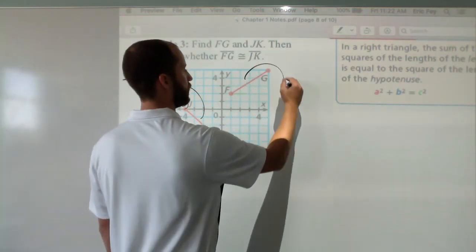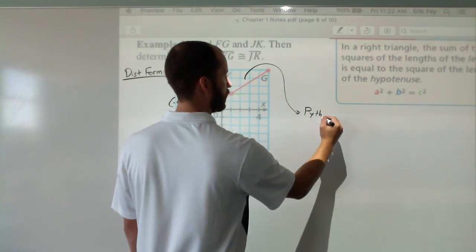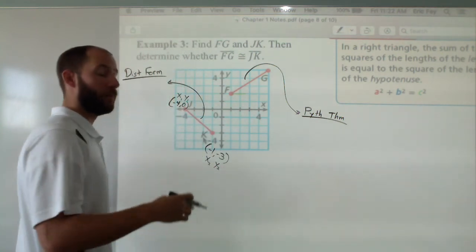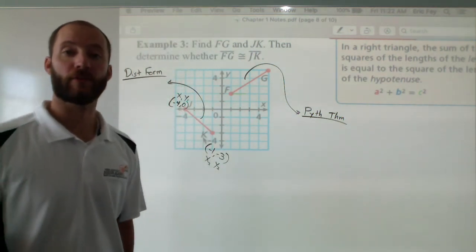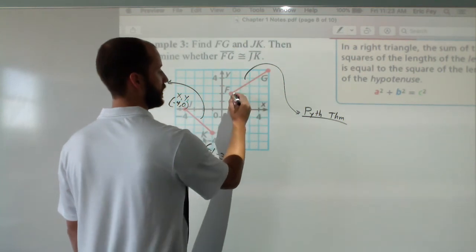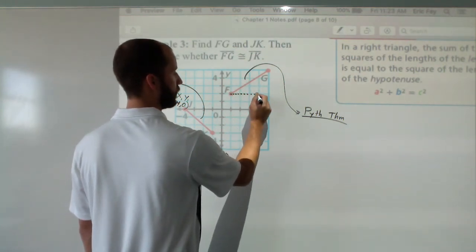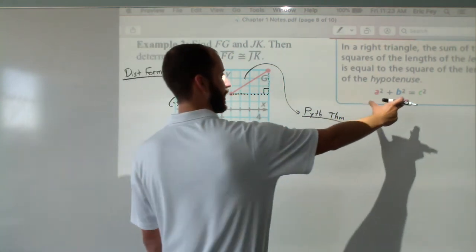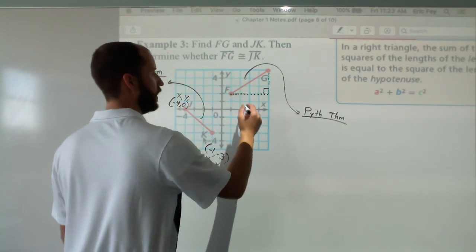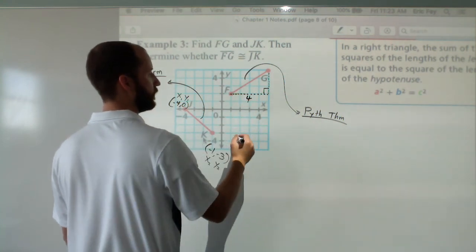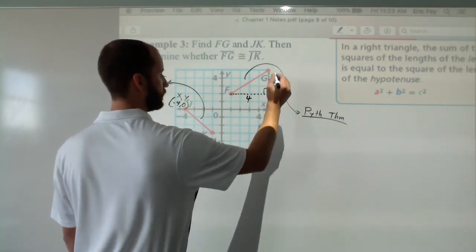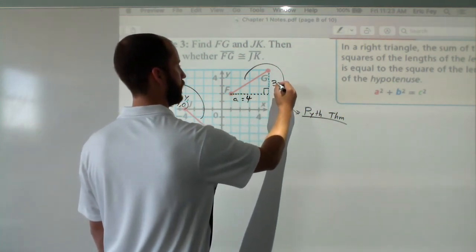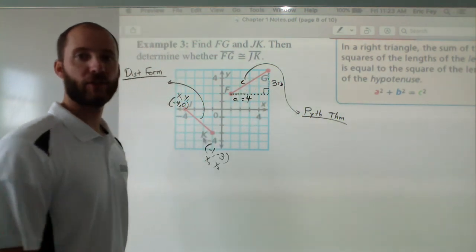For FG, let's use the Pythagorean theorem. Now Pythagorean theorem requires you to set up a right triangle. So with F and G, let's set up a right triangle. We have this A squared plus B squared equals C squared equation. So let's call A this horizontal, it's 4. Let's call B the vertical, 3. So this can be A, this can be B, your hypotenuse would be C.